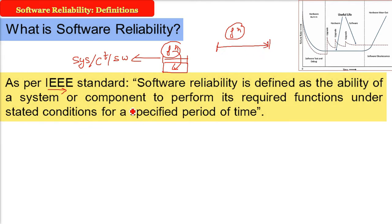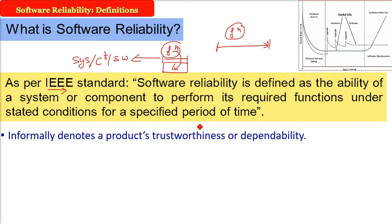This is also about probability, which I'll come to. But informally, software reliability is all about product worthiness, trustworthiness, and dependability - how much you can trust and depend on that particular product for a specified time under stated conditions.